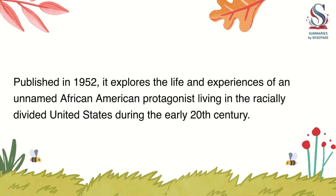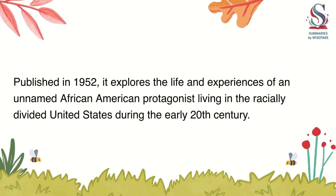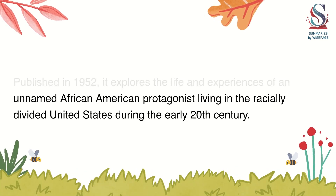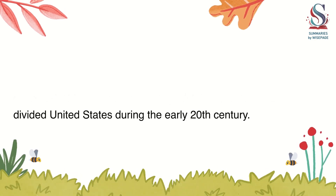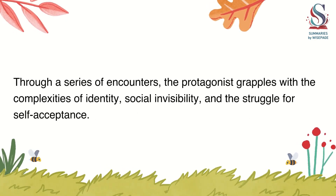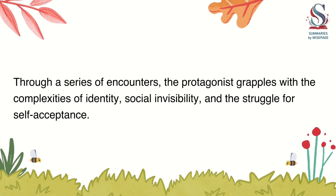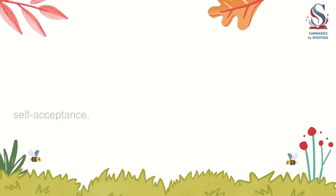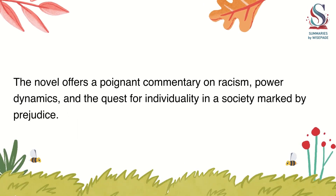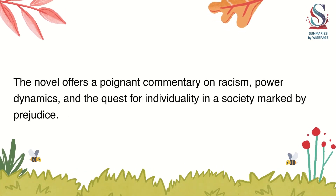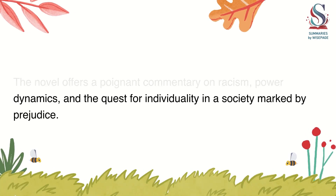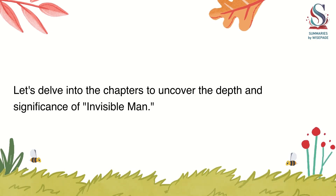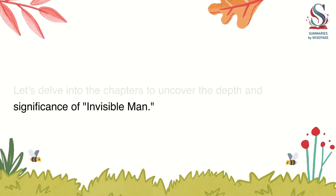Published in 1952, it explores the life and experiences of an unnamed African-American protagonist living in the racially divided United States during the early 20th century. Through a series of encounters, the protagonist grapples with the complexities of identity, social invisibility, and the struggle for self-acceptance. The novel offers a poignant commentary on racism, power dynamics, and the quest for individuality in a society marked by prejudice. Let's delve into the chapters to uncover the depth and significance of Invisible Man.